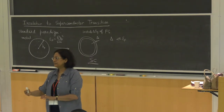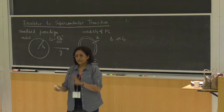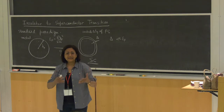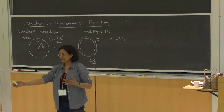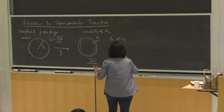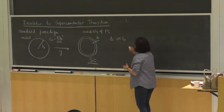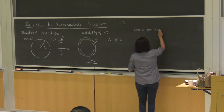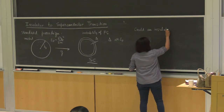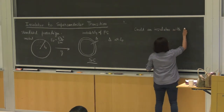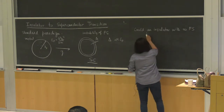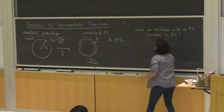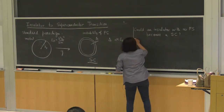Superconductivity is an instability of a metallic state. But the question we asked was: could an insulator, which has no Fermi surface, become superconducting? So it's asking the question the other way around, and it's actually very interesting what it leads to.